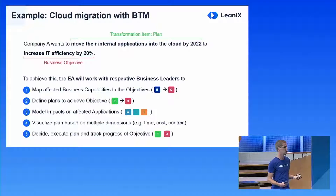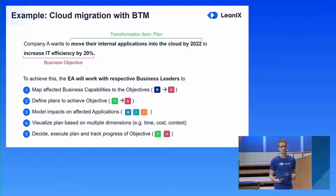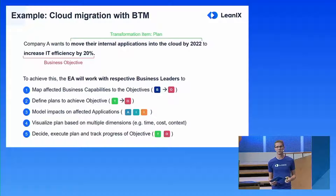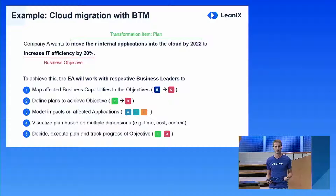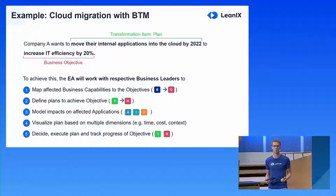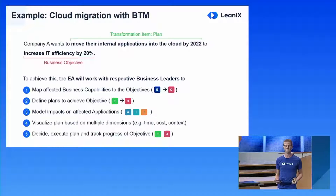Everything that your scenario is going to change needs to be modeled. In the fourth step, we want to visualize a plan based on multiple dimensions — based on time, on cost, on context. And in the end, of course, you need to decide and execute on a plan, and track progress of initiatives and objectives.